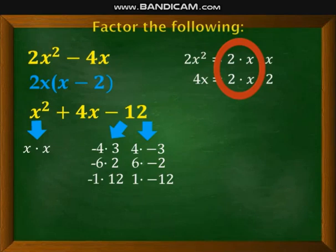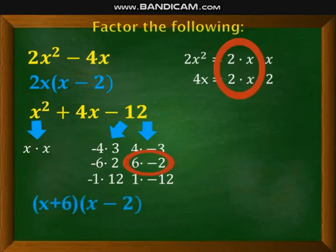Positive 6 and negative 2. This will give you positive 4 if you're going to get the difference, because they have different signs. But the product is -12, and the difference is 4. Therefore, you can easily get the factor by getting x and +6, and another x and -2. That's the factor. Very easy to get the factor for this quadratic trinomial if your x² coefficient is 1.